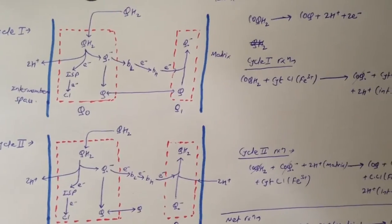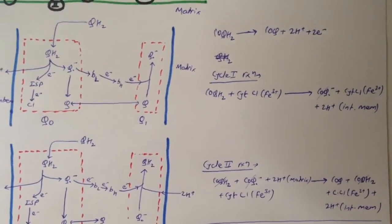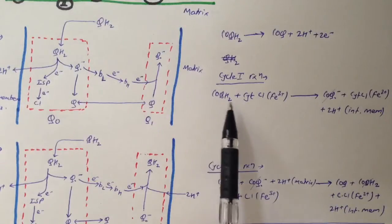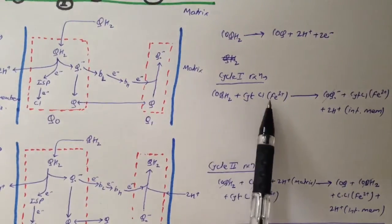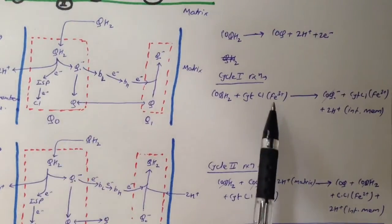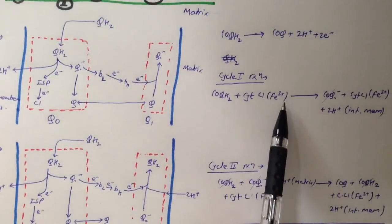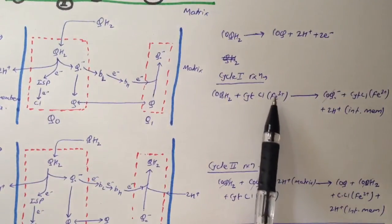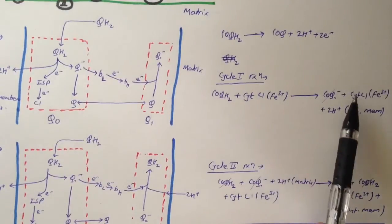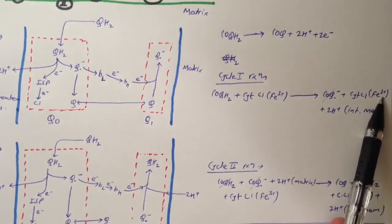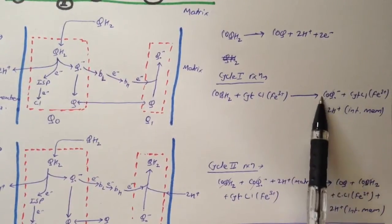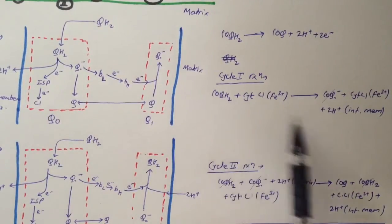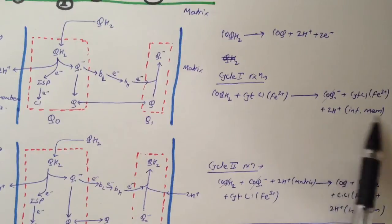The net reaction in cycle I: we start with coenzyme QH₂ and cytochrome c1 in the Fe³⁺ state. When cytochrome c1 receives an electron it changes to the Fe²⁺ state. The net products are one coenzyme Q•⁻ and 2 H⁺ released to the intermembrane space.